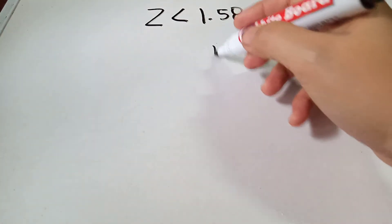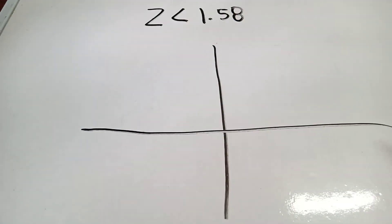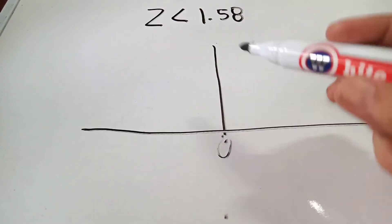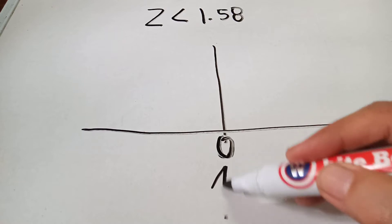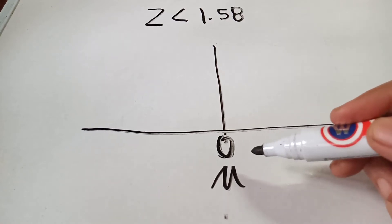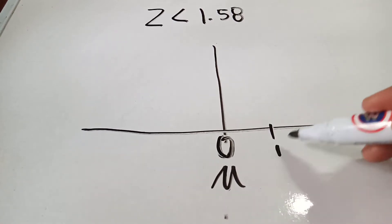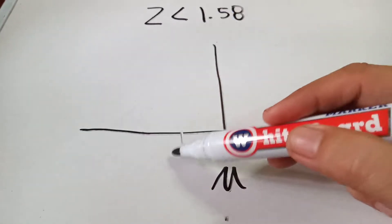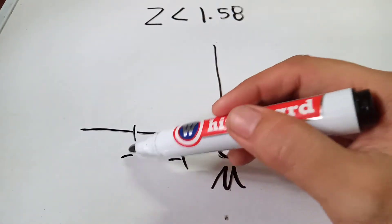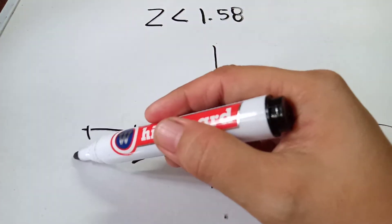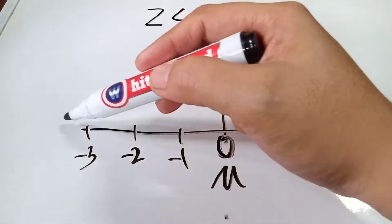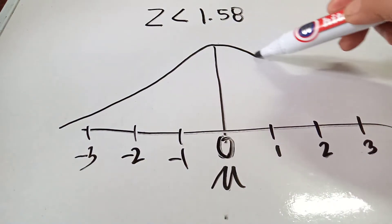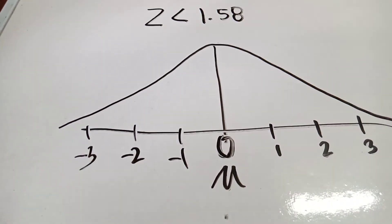The normal curve has an X and Y axis. In the center is 0, and we have the expected values: positive 1, positive 2, positive 3, and then negative 1, negative 2, and negative 3. So we will draw a bell-shaped curve — this is our bell-shaped curve.